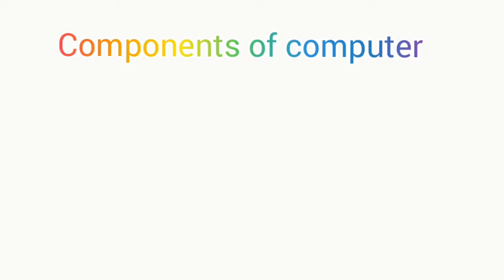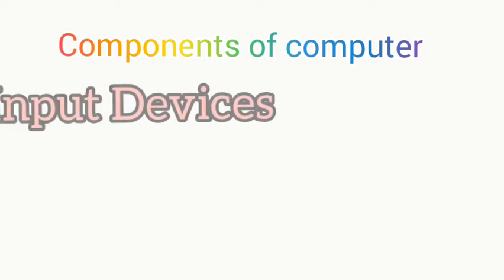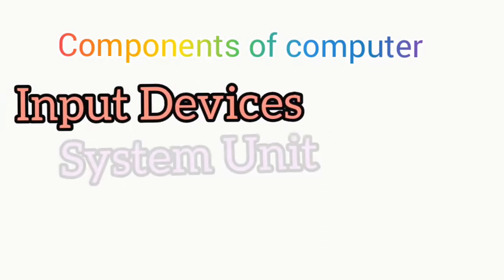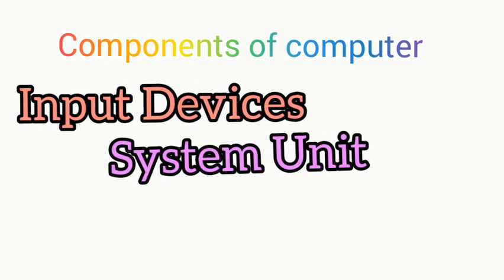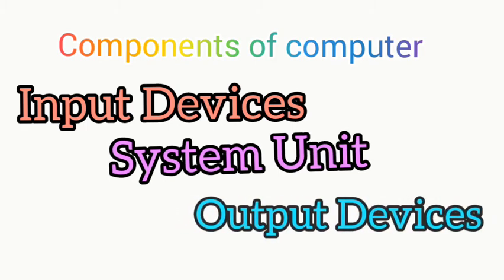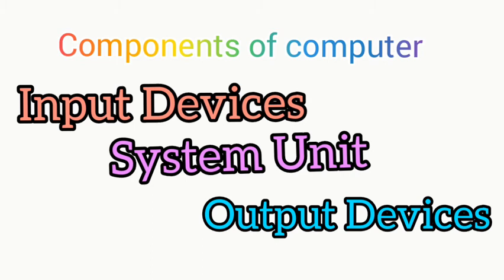The components of a computer are divided into three categories. Do you know what they are? One — input devices. Two — system unit. And three — output devices. These are the three categories of components of a computer: input devices, system unit, and output devices.